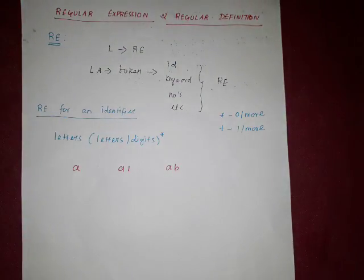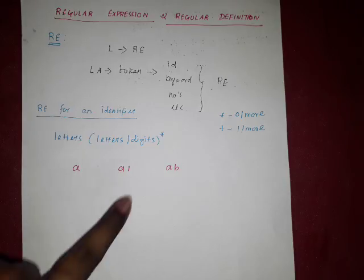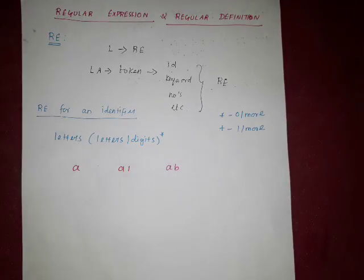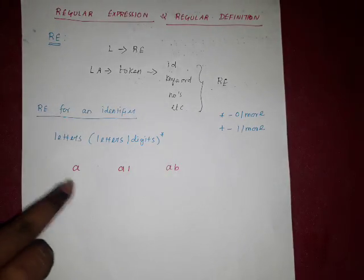We will see what is the regular expression for an identifier. If the user declares anything for their own purpose, then that is an identifier. For example, 'a' is an identifier, 'a1' is an identifier, and 'ab' is an identifier.